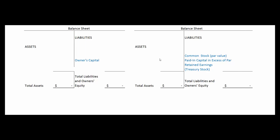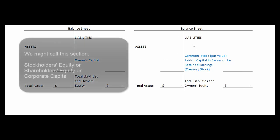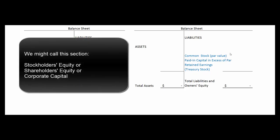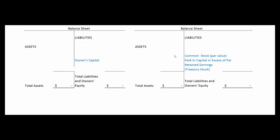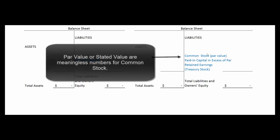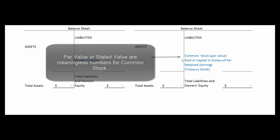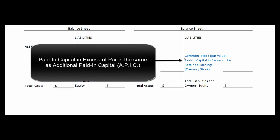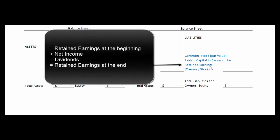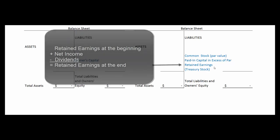With a corporation we still have assets on the left, liabilities on the right, and owner's equity accounts on the right — but we call them shareholders equity because the owners are the shareholders. Instead of one category, we break it into subcategories: the par value of stock goes into one account; paid in capital in excess of par, also called additional paid in capital or APIC, is another; retained earnings is a third — retained earnings at the beginning plus net income minus dividends gives retained earnings at the end.